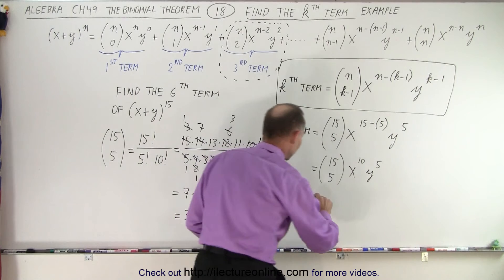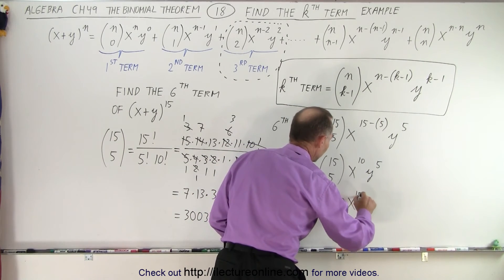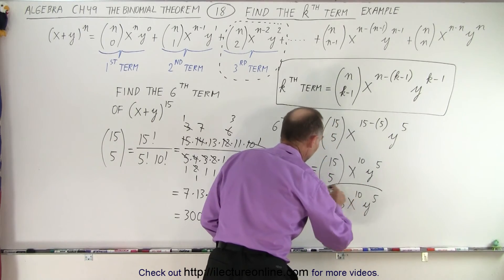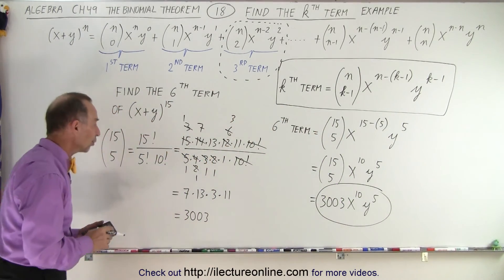And so that's the number that goes in here. So this is equal to 3003 x to the 10th y to the 5th power. And that is how we find any term in any binomial expansion.